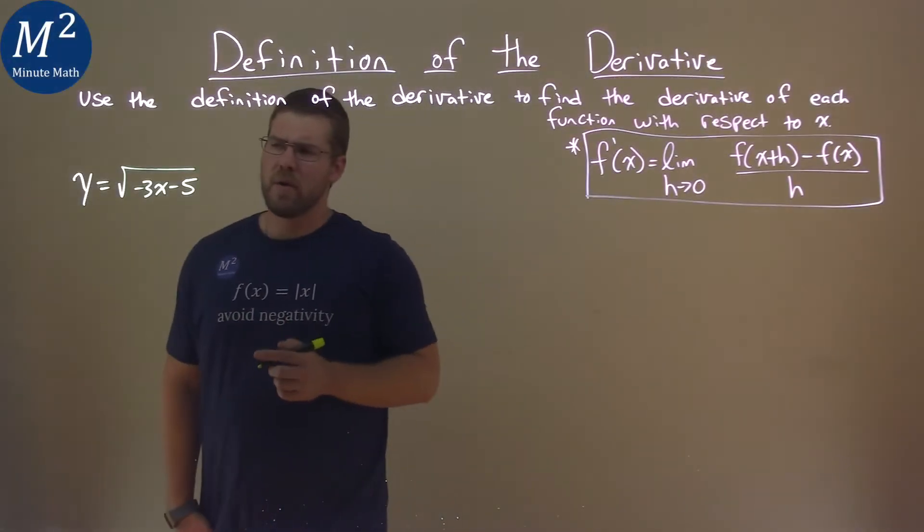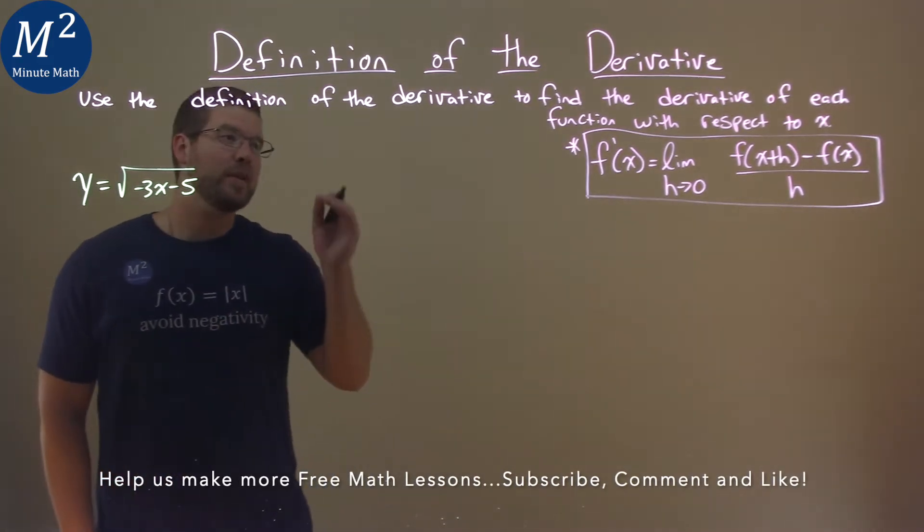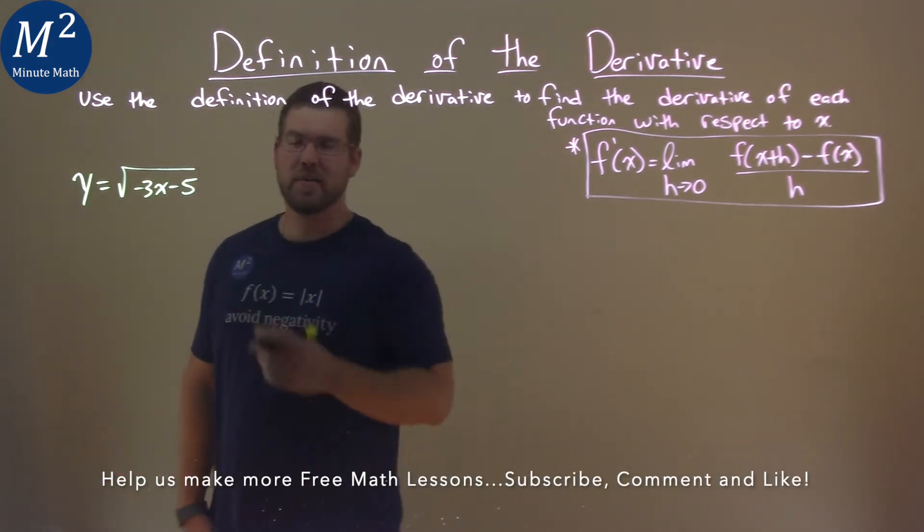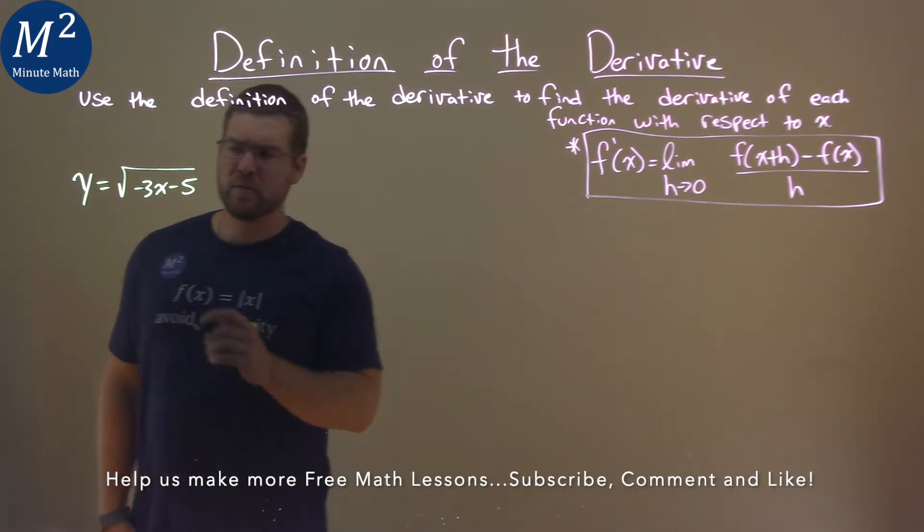We're given this problem right here. Y equals the square root of negative 3x minus 5, and we have to use the definition of the derivative to find the derivative. Well, our definition is given right there. So, let's apply that.